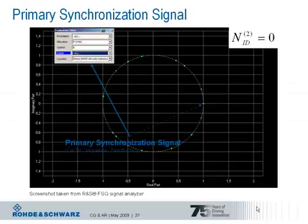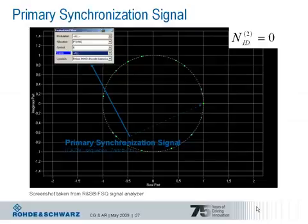As previously explained, 72 subcarriers translate to 6 resource blocks, as 12 subcarriers form a resource block in the frequency domain. With 15 kHz subcarrier spacing, the occupied bandwidth around the carrier frequency is 1.08 MHz.